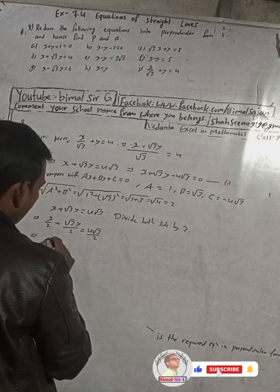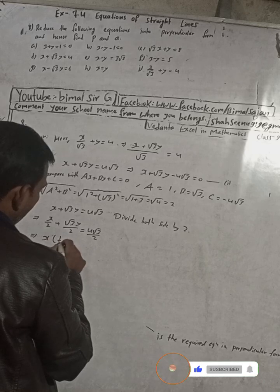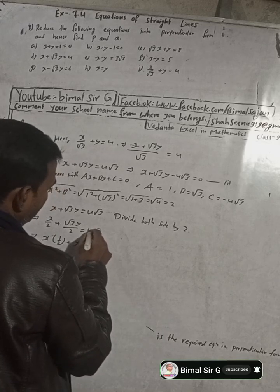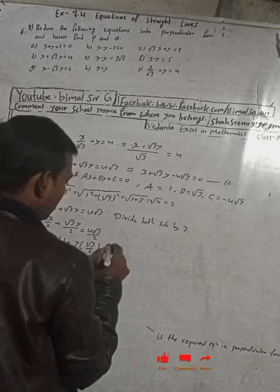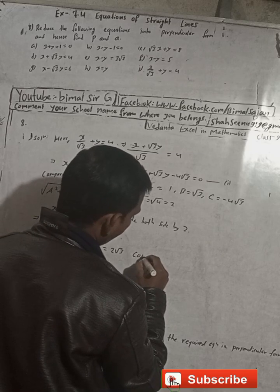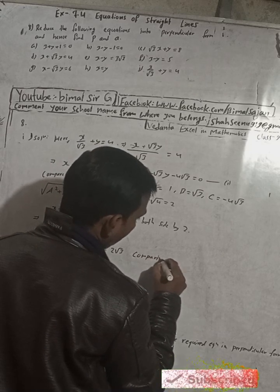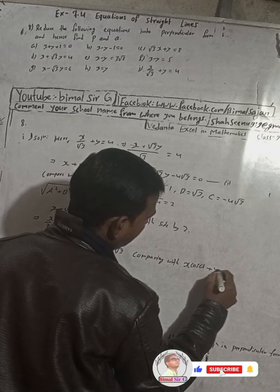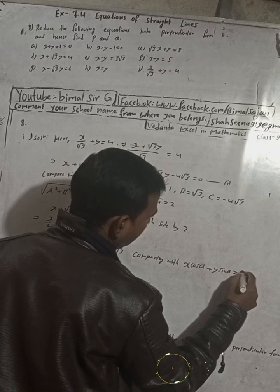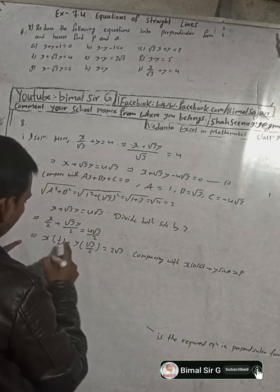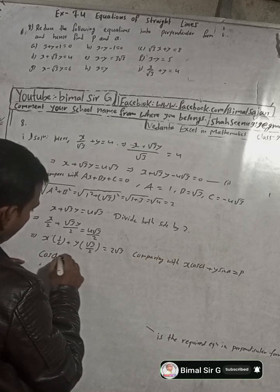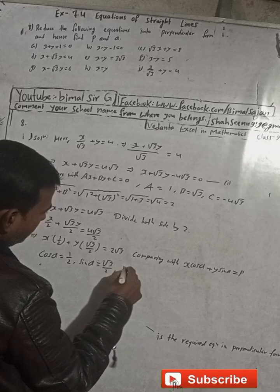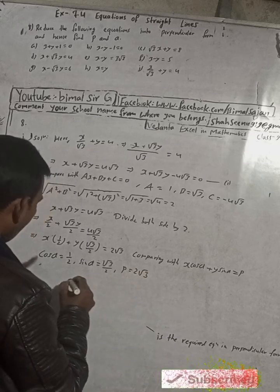This can be written as x·(1/2) + y·(√3/2) = 2√3. Comparing with x cosα + y sinα = p, we get cosα = 1/2, sinα = √3/2, and p = 2√3.